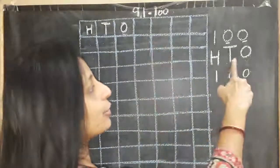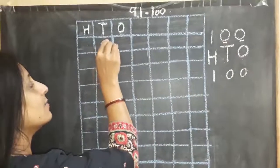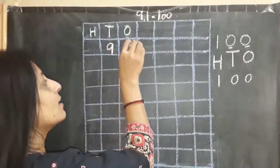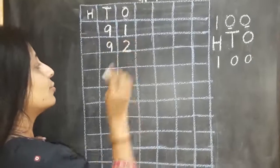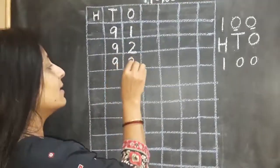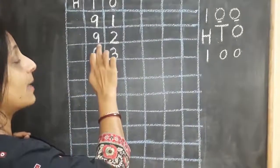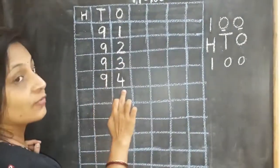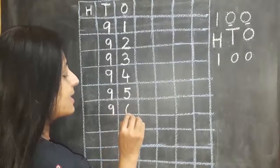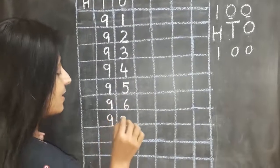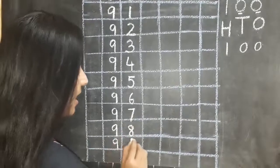No. As I told you, here we will be having 10s and 1s, so 9 will be coming in T and 1 will come in O. 9, 1 — 91. 9, 2 — 92. 9, 3 — 93. 9, 4 — 94. Children, every time remember that your number should touch the lower line of the box. 9, 5 — 95. 9, 6 — 96. 9, 7 — 97. 9, 8 — 98. 9, 9 — 99.